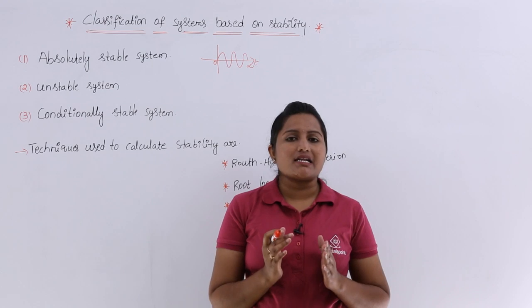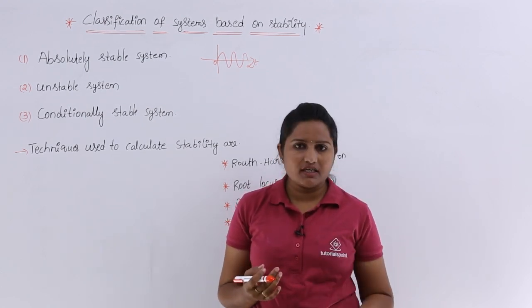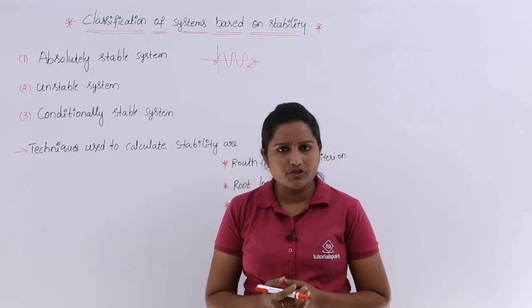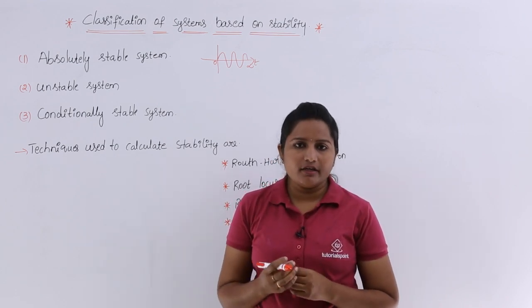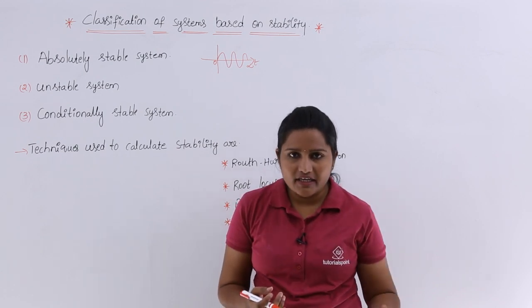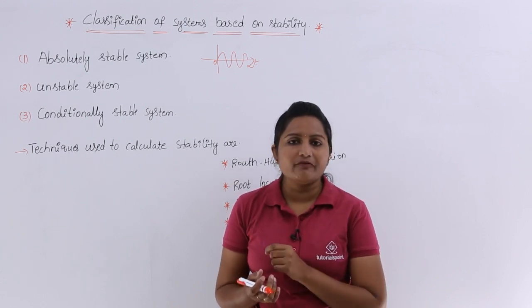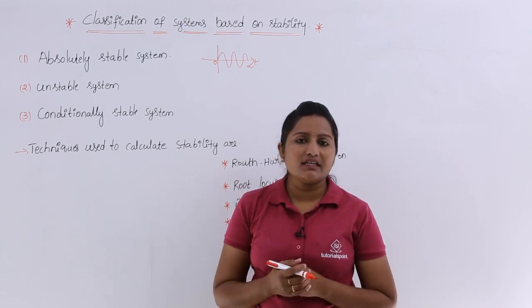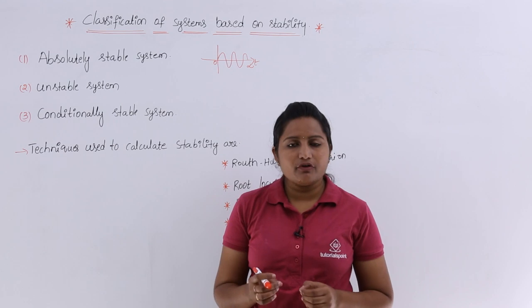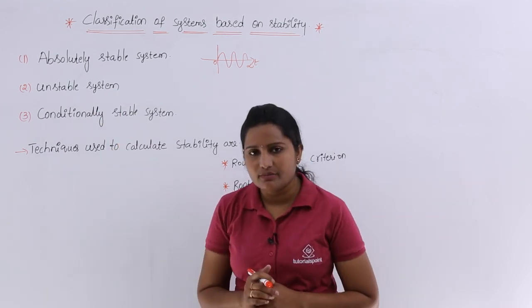For an unstable system, whatever the general definition for unstable system is, we apply it here also. If your parameter is going to vary, and for all variation of that parameter the output is not bounded or output is not finite, then you can say that is an unstable system. If your output is not bounded or finite, then we can say that system is unstable.